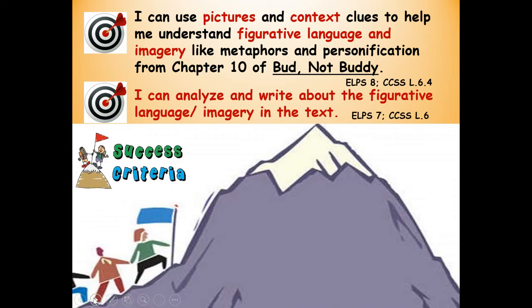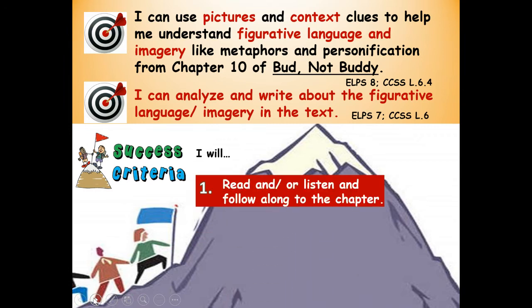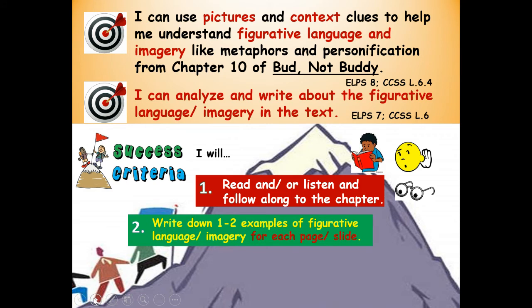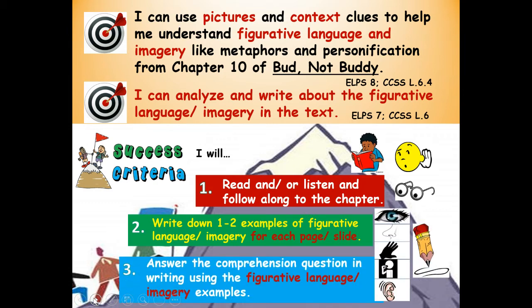Success criteria — that means how will you know you're successful at using pictures and context clues to understand the figurative language, and also how will you know you're successful at analyzing and writing about it? Here are our steps to success. Number one: I will read and/or listen and follow along to the chapter. Two: write down one to two examples of figurative language or imagery for each of the slides I show you, whenever you see that pencil. And then: answer the comprehension question in writing using the figurative language examples, at least two.